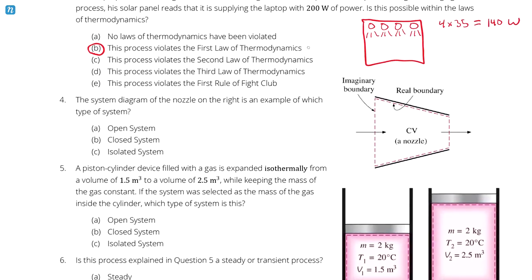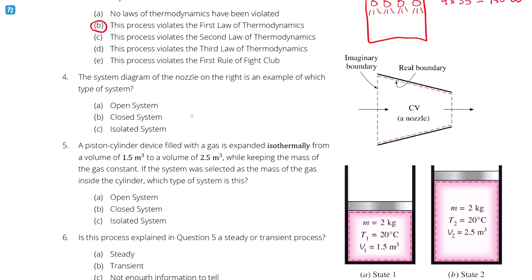Question number four. The system diagram of the nozzle on the right is an example of which type of system? A open system, B closed system, or C isolated system. So let's review what these mean. In an open system, both energy and mass are allowed to cross the boundary. That's the boundary of the system. In this case, this nozzle, this is sort of a side view of a nozzle. The fluid is flowing through it in this direction. We have a boundary set up for us already. In a closed system, energy is allowed to cross the boundary, but mass isn't. In an isolated system, neither mass nor energy are allowed to cross the boundary. So, in this case, we can see that the fluid flowing through the nozzle has to cross the boundary. Therefore, we have mass crossing the boundary. The only system description which fits this type of scenario would be an open system. This is best described as an open system.